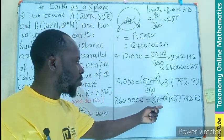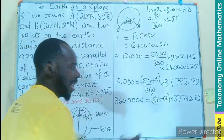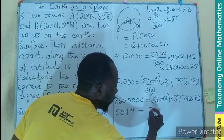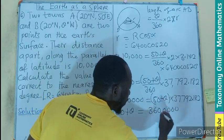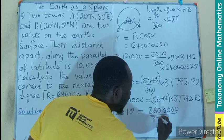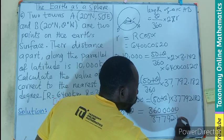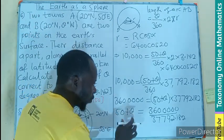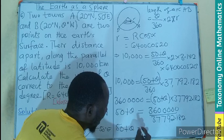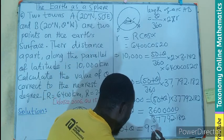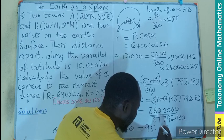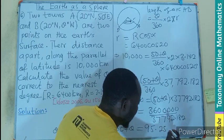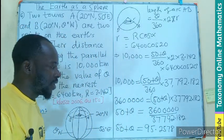So we divide both sides by that coefficient, making our 50 plus theta equals to 3,600,000 divided by 37,792.182. So let's see what that will give us. So this will be our 50 plus theta equals to 95, 95.2578 if we are picking 4 decimal places.